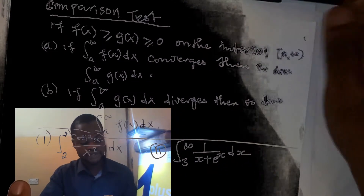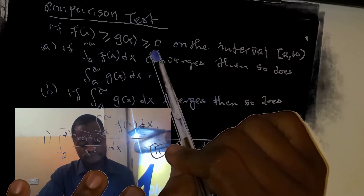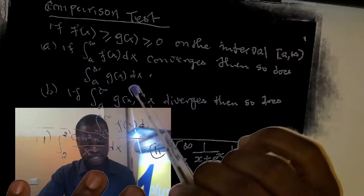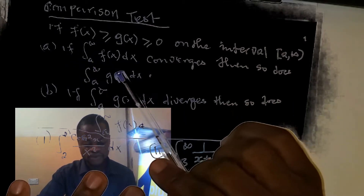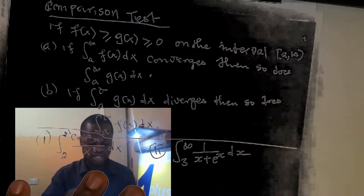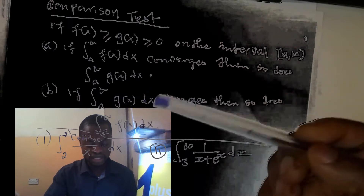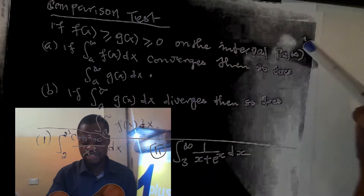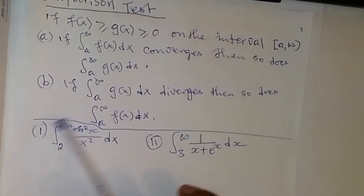In this video I'm going to show you how you can use the comparison test to find integrals of a given function. Here we have the definition: if f(x) is greater than g(x) and g is greater than zero on the interval a to infinity, then by the comparison test, if the integral of f(x) is convergent, so is the integral of g(x). Also, if the integral of g(x) is divergent, then the integral of f(x) is also divergent.